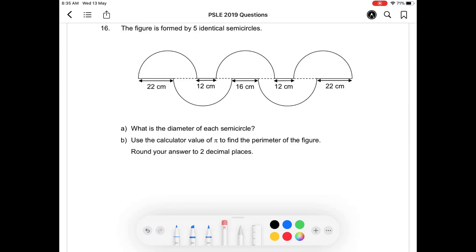Question 16. The figure is formed by five identical semicircles. Part A, what is the diameter of each semicircle? Part B, you are supposed to find the perimeter of the figure.